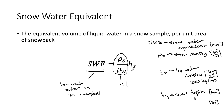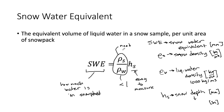Snow depth is easy to measure — you essentially go out with a glorified ruler. But to get SWE, you need an estimate of snow density, or more directly the ratio of snow density to liquid water density, in order to determine how much water content is in that snow. So we need snow density in order to calculate SWE, and getting that is what we'll be covering in subsequent slides.